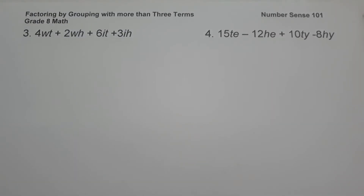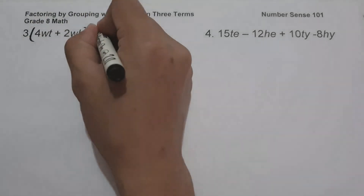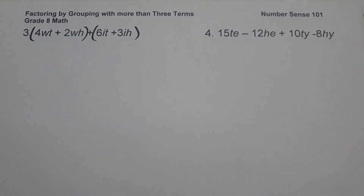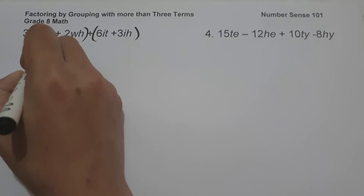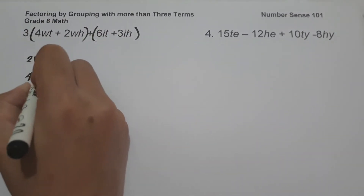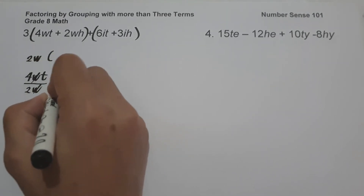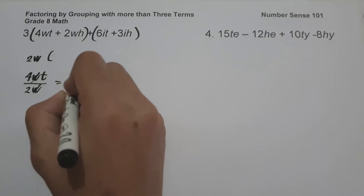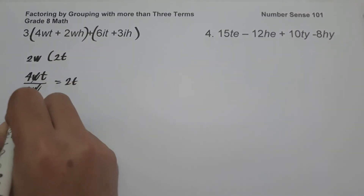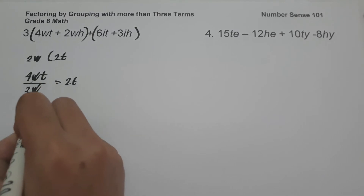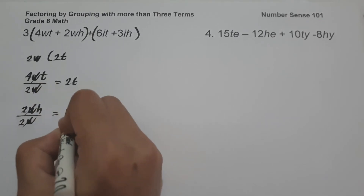On example number 3, we have 4WT plus 2WH plus 6IT plus 3IH. Let us solve this using factoring by grouping. The greatest common factor of 4WT and 2WH is 2W. So 4WT divided by 2W: cancel variable W, 4T divided by 2 gives 2T. Then 2WH divided by 2W: cancel, giving H.